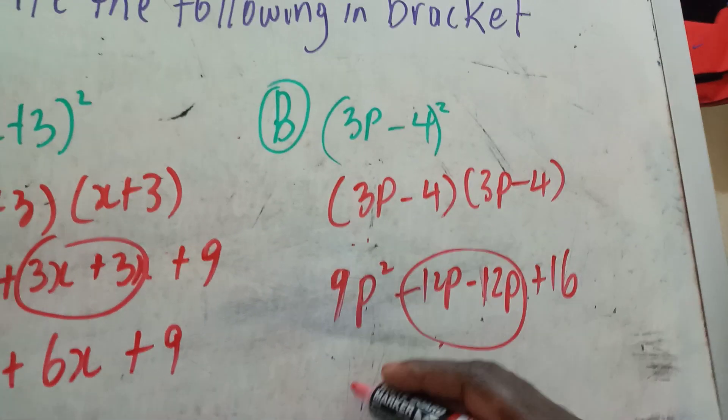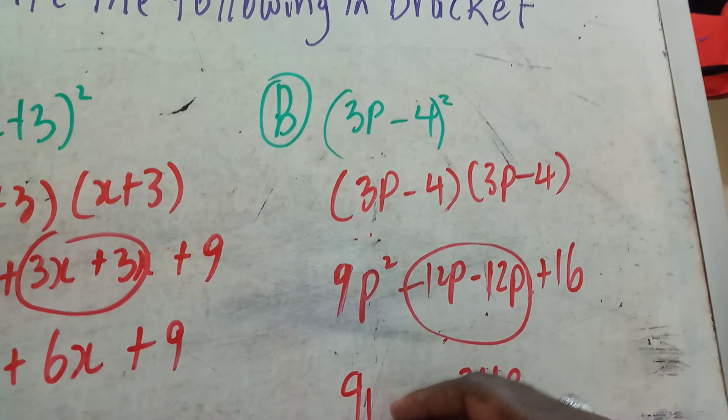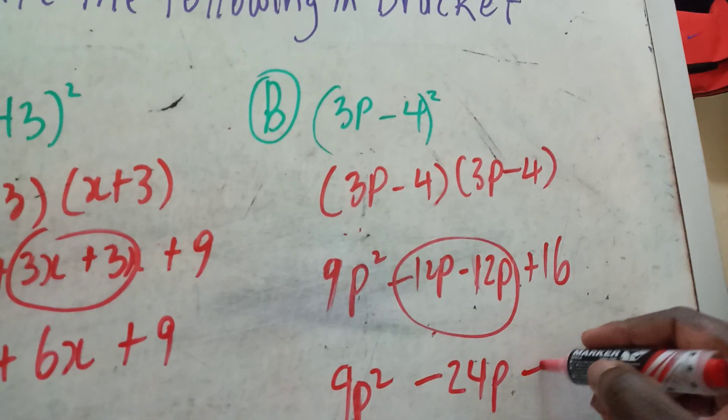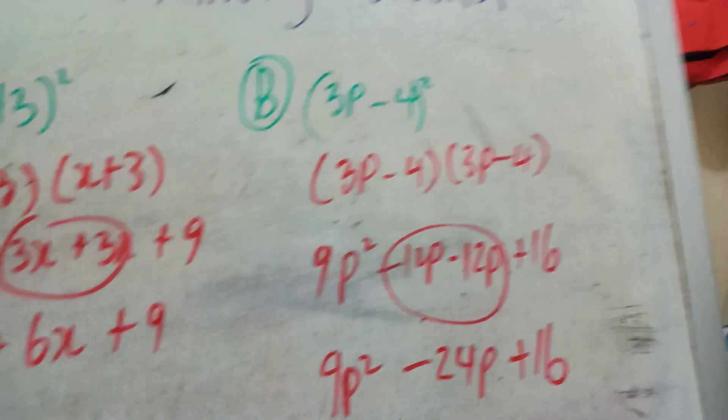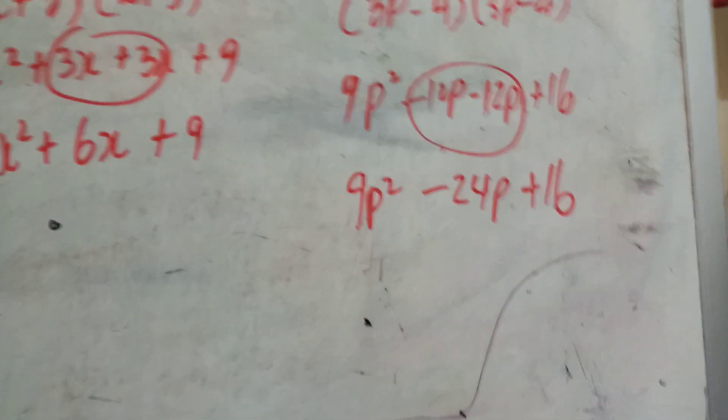We have 9p² and 16, and that would be your answer: 9p² - 24p + 16.